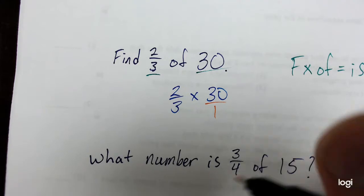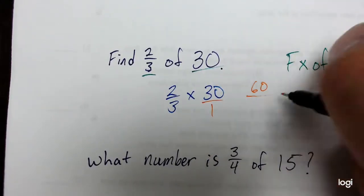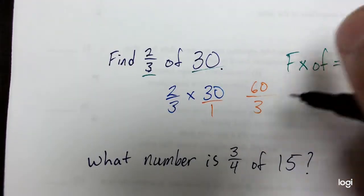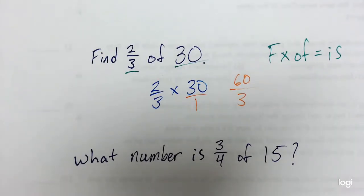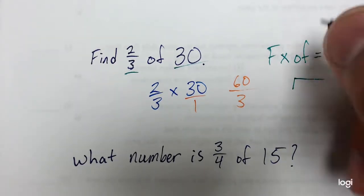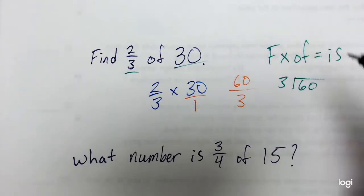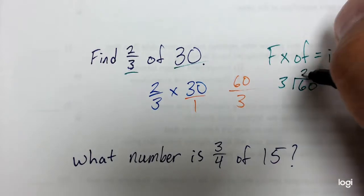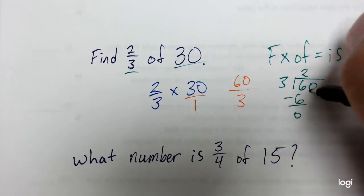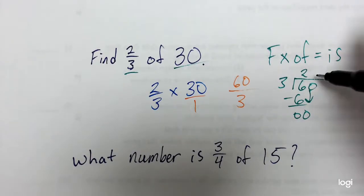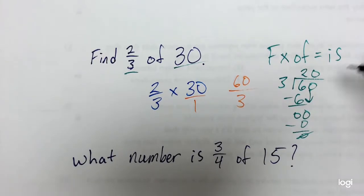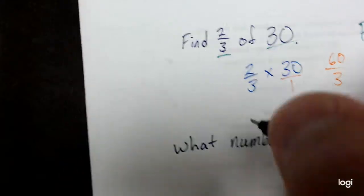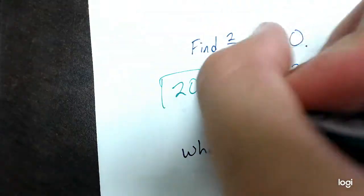Then 2 times 30 is 60. 3 times 1 is 3. And then I can reduce. I might have to do a little bit of division to reduce this. Let's see here. How many times will 3 go into 60? 3 goes into 6 two times. 2 times 3 is 6. Subtract 0. Bring down the 0. 3 goes into 0 zero times. And my answer is 20. So 2/3 of 30 is 20.